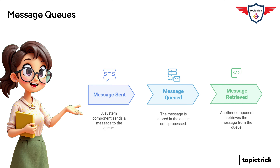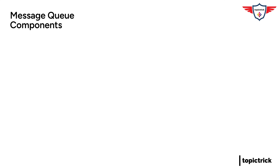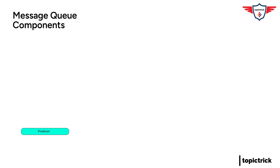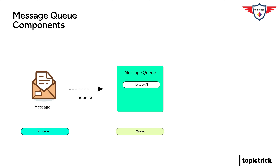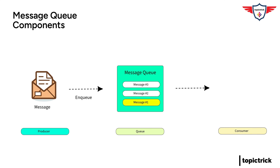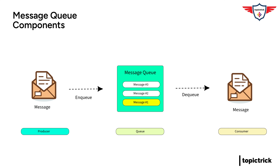There are three main parts to a message queue. The first is the producer, which is just a fancy name for the thing that creates and sends the message. Then you have the queue itself, which is basically just a storage space where the messages hang out until they're processed. And finally you have the consumer, which is the thing that receives and processes the message. So: producer, queue, consumer.